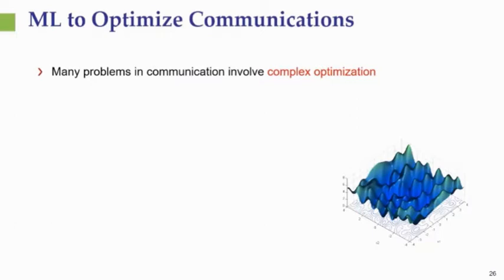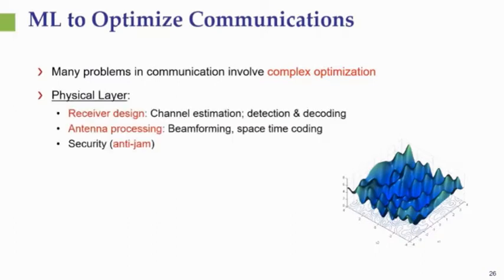In general, when treating various design problems in communication systems, we often end up with complicated optimization problems, which can include many design variables, may be non-convex or even intractable, and often depend on system parameters that might not be known. For example, one of the fundamental problems in the physical layer is designing an optimal receiver to detect and decode transmitted symbols.